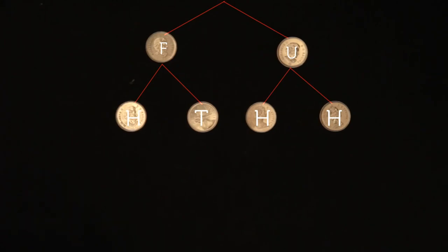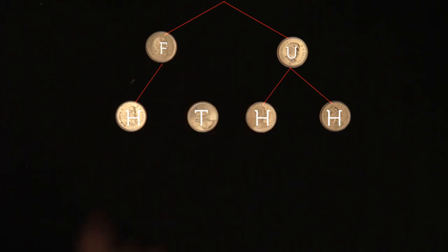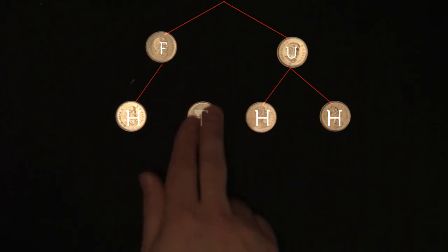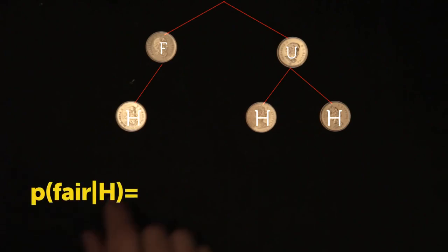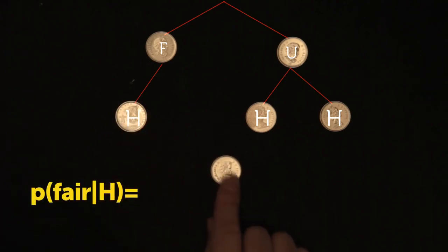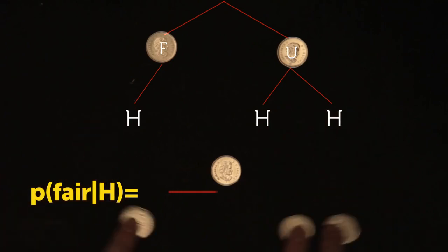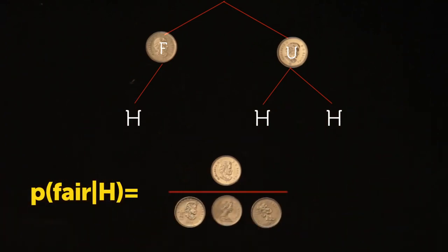Whenever we gain evidence, we must trim our tree. We cut any branch leading to tails because we know tails did not occur. So the probability that he chose the fair coin is the one fair outcome leading to heads, divided by the three possible outcomes leading to heads, or one third.